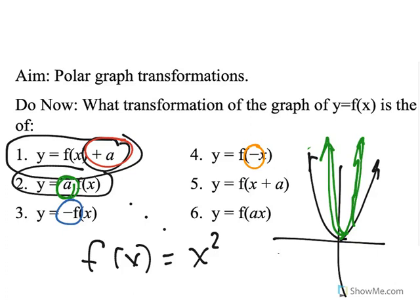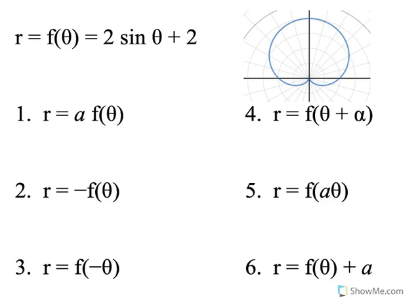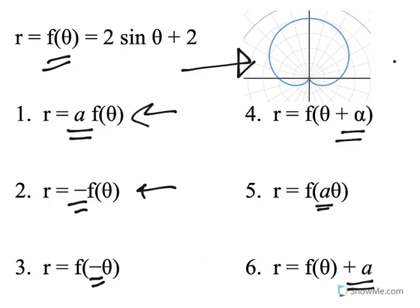Now let's see what happens. So if you take a look, here I have the same sorts of transformations, but my function is now f of theta. And here's the graph of f of theta equals 2 sine theta plus 2. We have that cardioid. And we want to see what is the effect of putting a coefficient in front, or a negative here, or a negative there, or a plus alpha there, or what if the coefficient is in front of the theta, or if there's a plus alpha. But let's look at what happens in polar graphs.